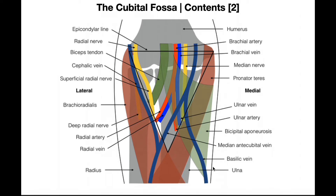Now for the veins — all three are superficial veins. The first is the basilic vein. The basilic vein is a superficial vein and is a general name for veins that drain blood from the medial side of the upper extremity. It goes all the way down to the hand, through the wrist and forearm, courses through the cubital fossa, and keeps going up until it eventually penetrates into the deeper tissue and becomes the axillary vein.